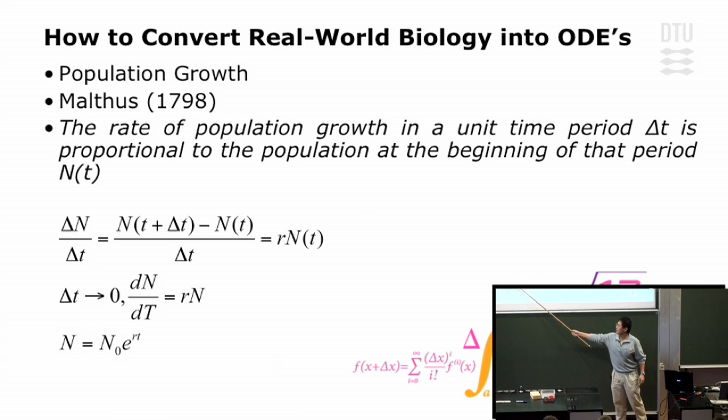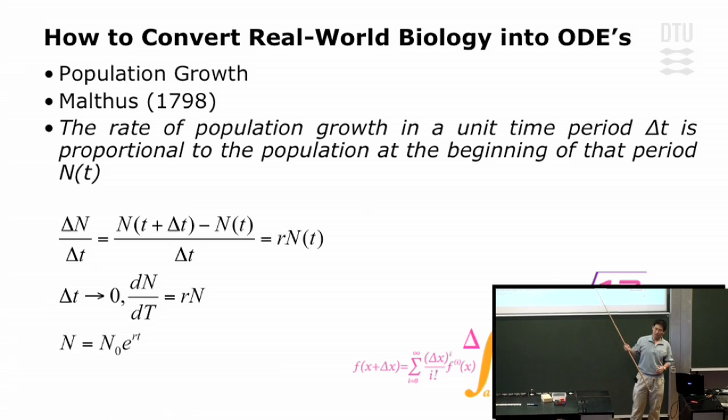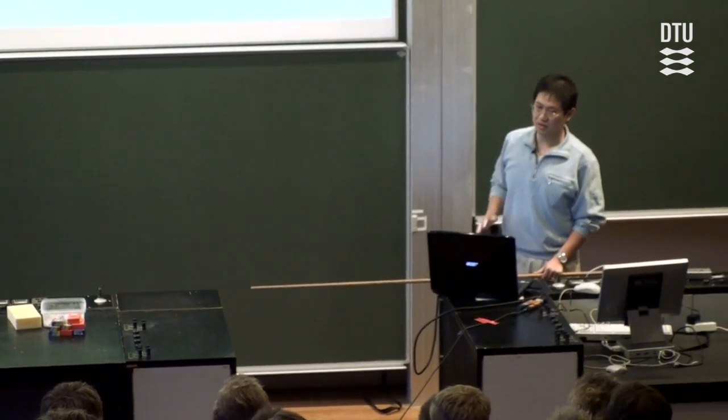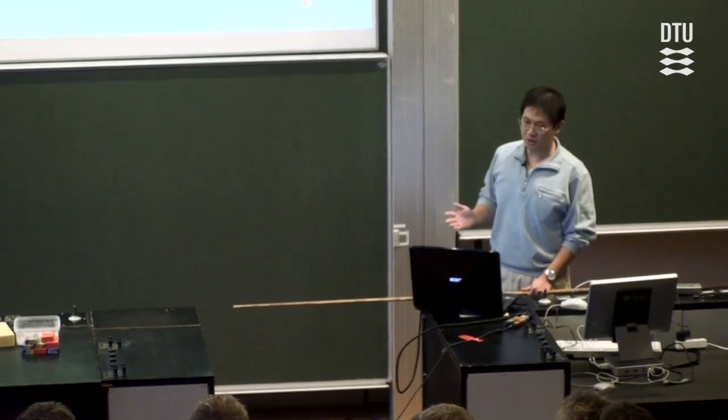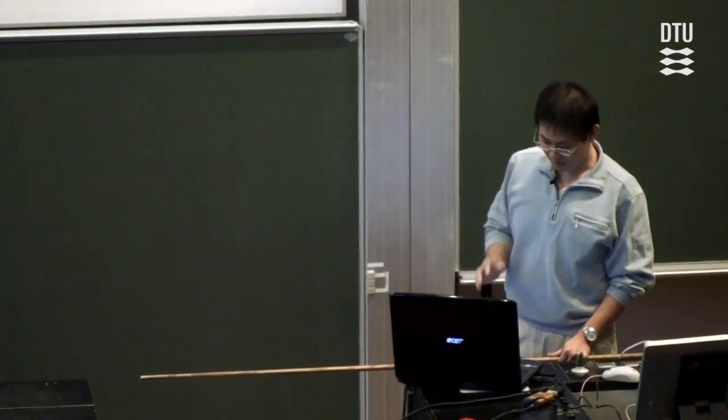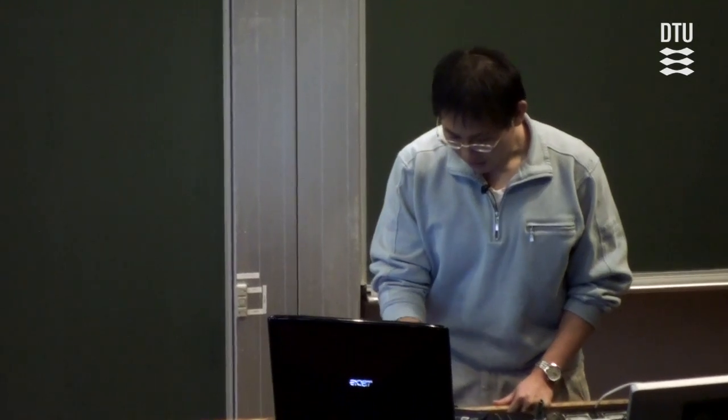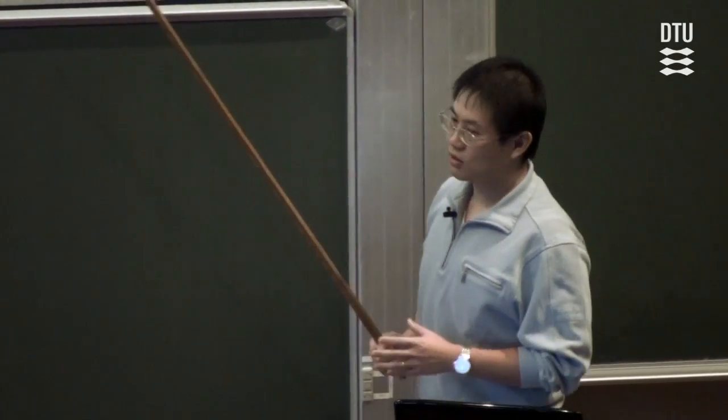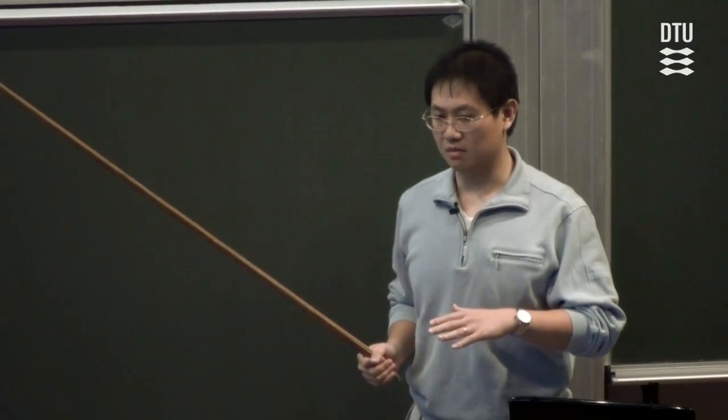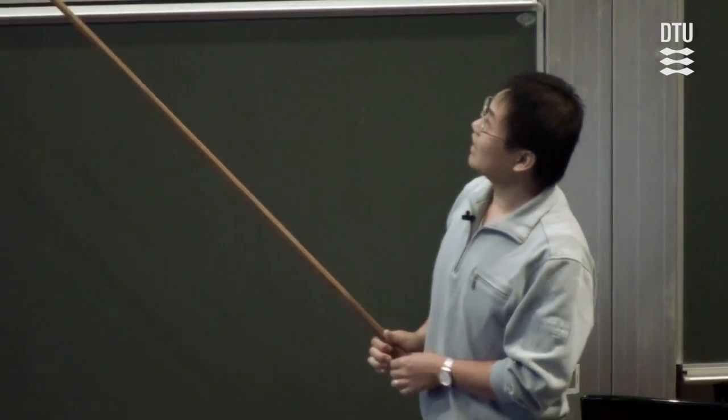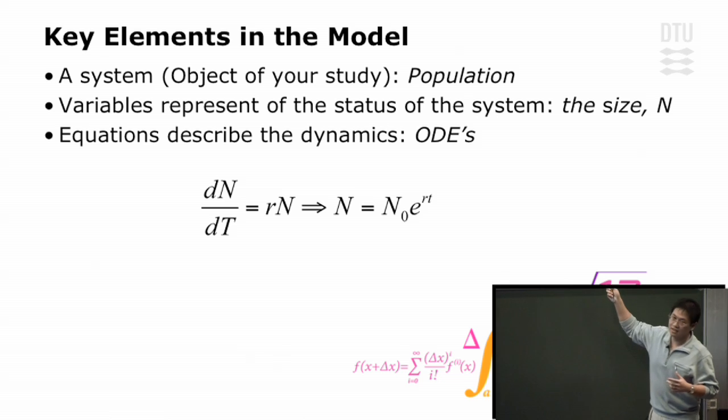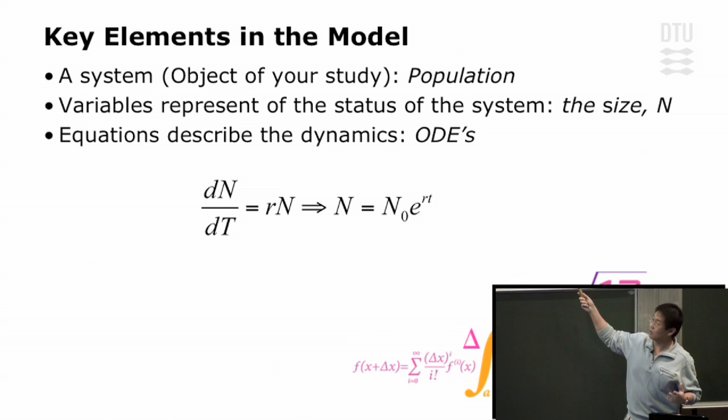By solving it, we get a function which governs the dynamics of population growth. You might have a problem understanding every detail of this process. Well then never mind, because I'm pretty sure in a few weeks this will simply become a piece of cake for all of you. What I do want you to pay attention to is that there are several key elements that you need to find out before you can convert a real-world biology into ODEs. First, you need to find out your system, the object you're interested in your study. In this case it's simply the population, the growth of population.